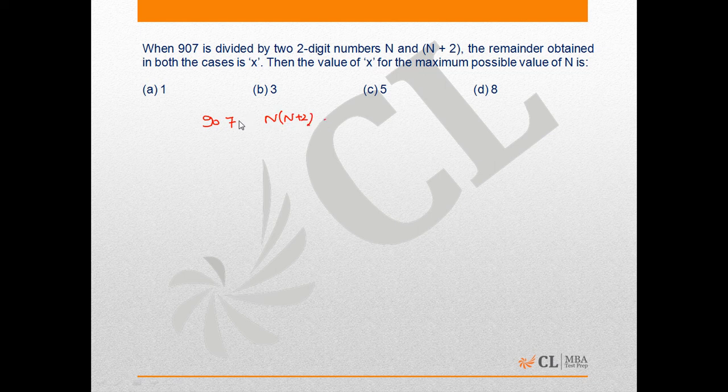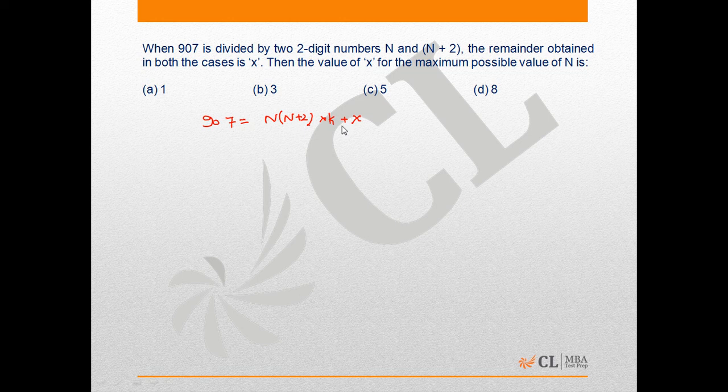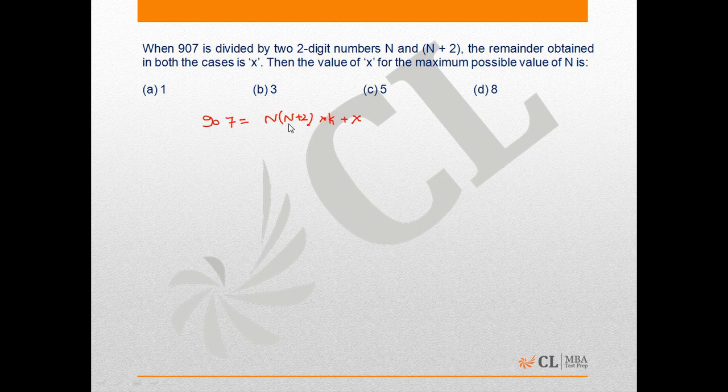You can write this as N×(N+2)×k + x equals 907. To maximize N, you have to minimize the remainder. Actually, to maximize N×(N+2), you put k as 1.